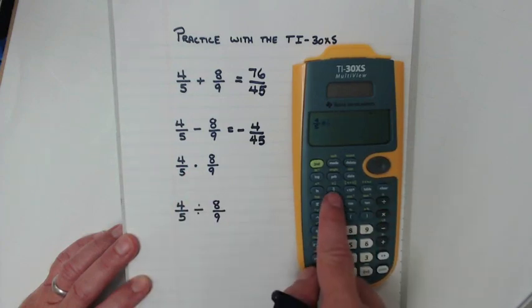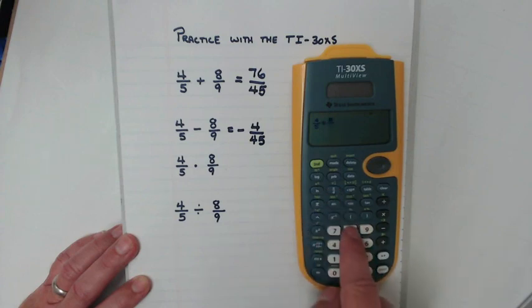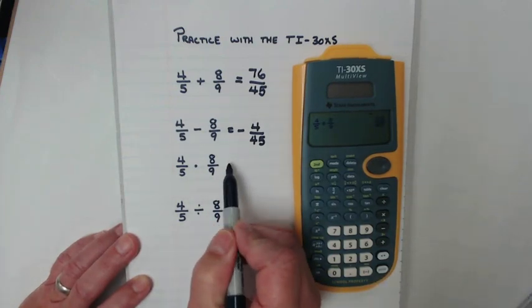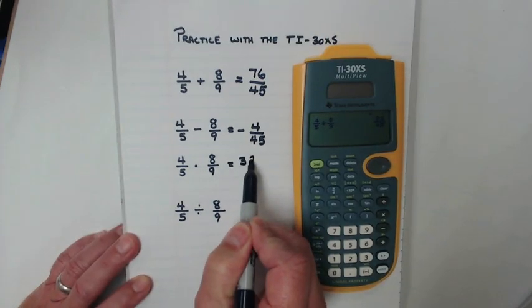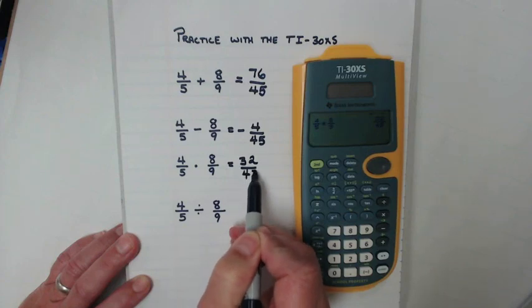Times. Fraction button. Eight, move it down. Ninths. Enter. I get 32/45.